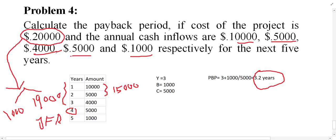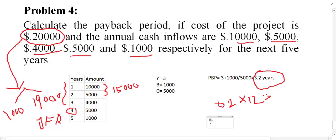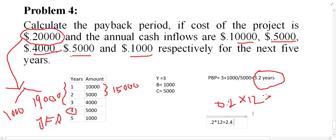If you want to convert 3.2 years into months, multiply 0.2 by 12, because one year equals 12 months. That gives 2.4 months, so the payback period is approximately 3 years and 2 months. If you want to convert further into days, multiply 0.4 by 30, and you can find within how many years, months, and days you can recover the original cost of investment.